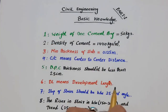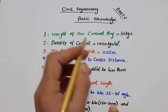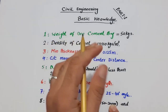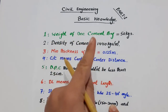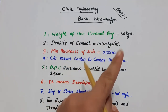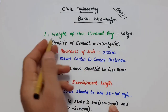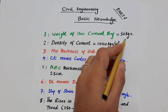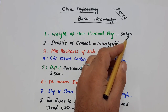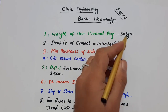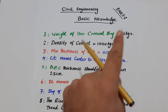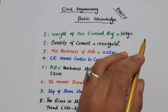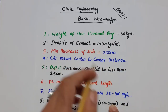The first one is: you should know what is the weight of one bag of cement. The weight of one cement bag is 50 kg.